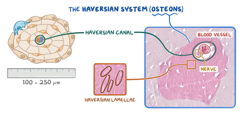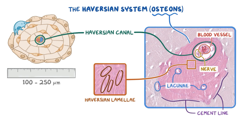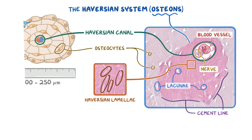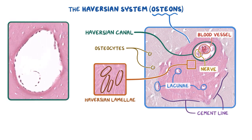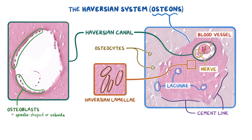Along the border of each osteon is a thin purple or basophilic line called the cement line. The white spaces throughout the osteon are the lacunae, which contain remnants of osteocytes. In this image of a Haversian canal, the osteoblasts can be seen lining the inner surface of the Haversian canal. Osteoblasts are large spindle-shaped or cuboidal cells that have a basophilic cytoplasm.